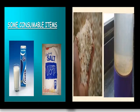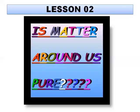You can see here a picture showing some consumable items — milk, salt, sugar, lemon juice. In this lesson, a new lesson in chemistry lesson two, we will study about the matter around us with a particular question: is matter around us pure?